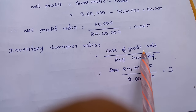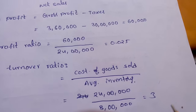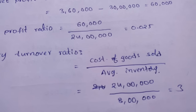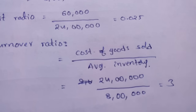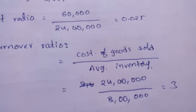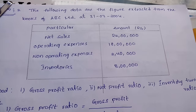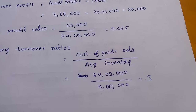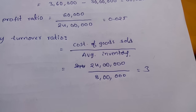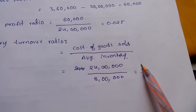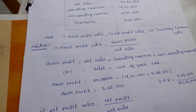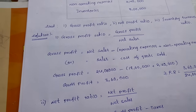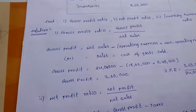The last ratio is the inventory turnover ratio. The formula is cost of goods sold divided by average inventory. Cost of goods sold is nothing but net sales, and average inventory is given in the problem as 8 lakhs. Simplifying: 24 lakhs divided by 8 lakhs gives us 3. We will do some more problems on other formulas given in the unit.